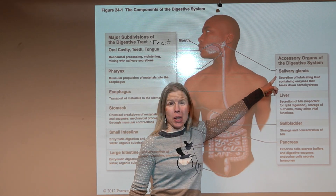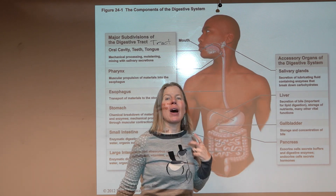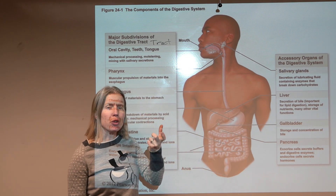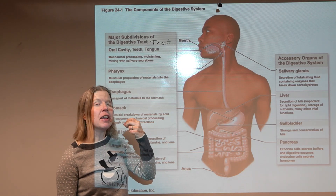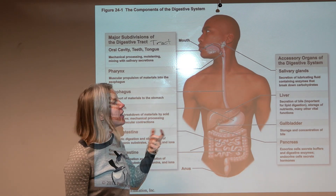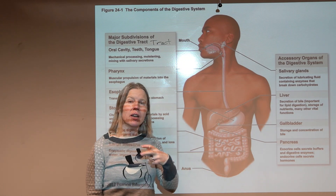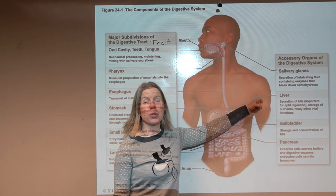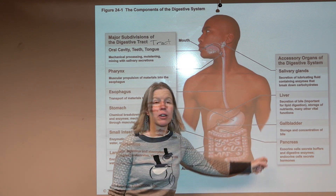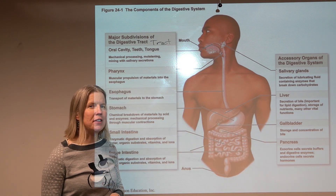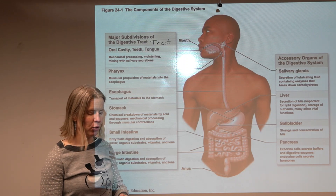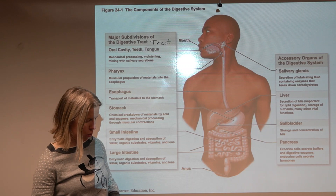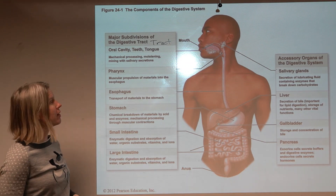The tract includes the oral cavity, the pharynx — which we share with the respiratory tract — the esophagus, stomach, small intestine, and large intestine. That is the tube the food travels through. The accessory organs include the salivary glands, which produce saliva and contain enzymes that start chemical digestion. We'll also talk about the liver, the gallbladder, and the pancreas, which have really big functions in the digestive system.